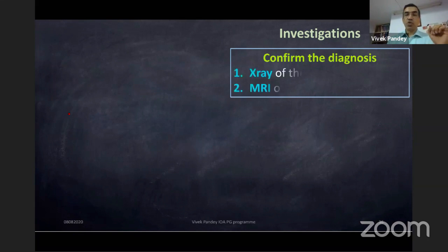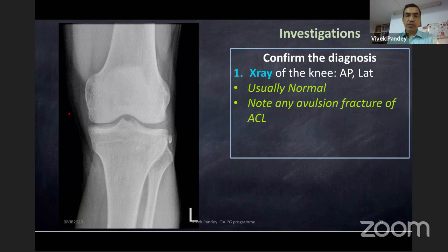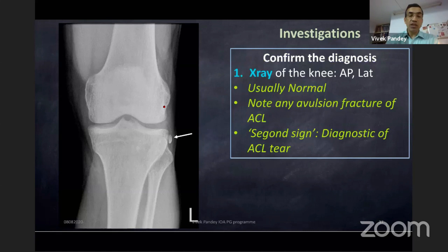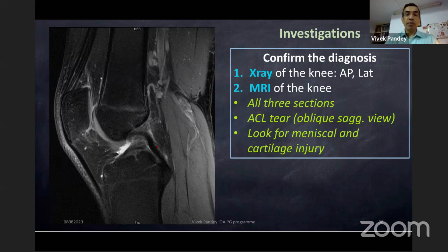To confirm diagnosis: X-ray is done to check alignment and see any fractures. There is also the Segond sign — a very diagnostic radiological sign of ACL tear, representing avulsion of the anterolateral capsule from the tibia. For MRI, always see all three sections. ACL tear is best seen in the oblique sagittal view, as it is placed slightly obliquely and not truly in the sagittal plane. Also look for meniscal and cartilage injury.